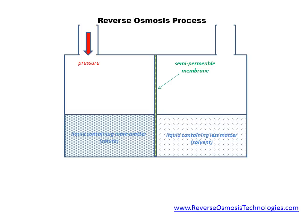This slide is similar to the second slide. It also depicts a container separated into two compartments by a semi-permeable membrane. The membrane is sealed to the walls of the container, so water can only flow through the membrane and not around it.